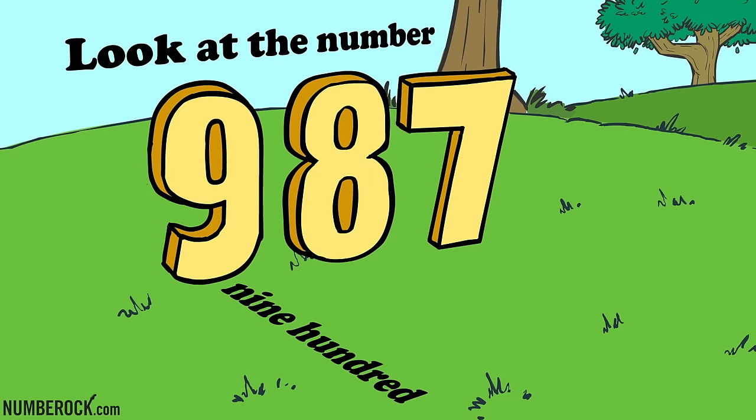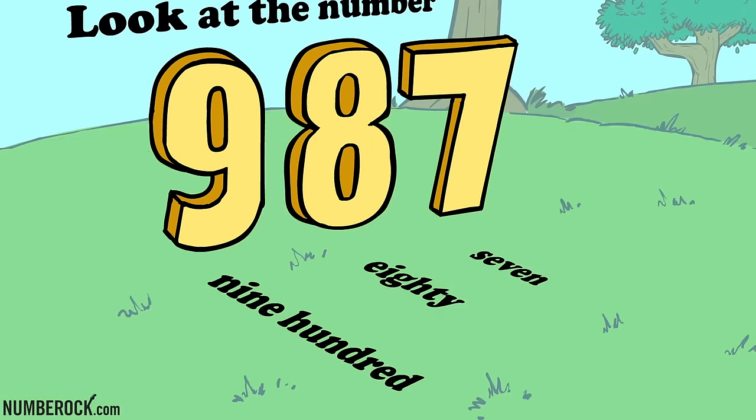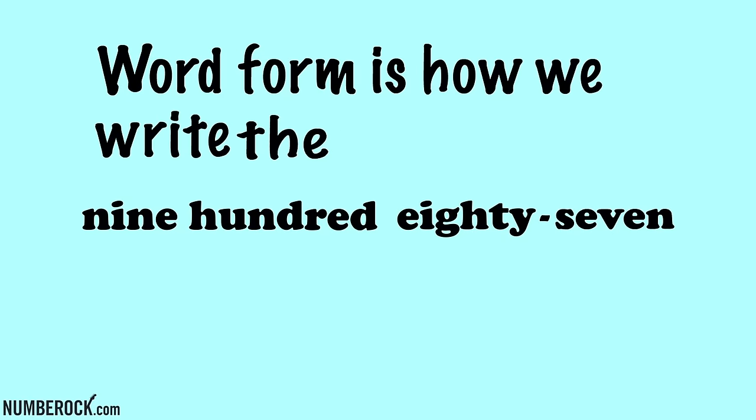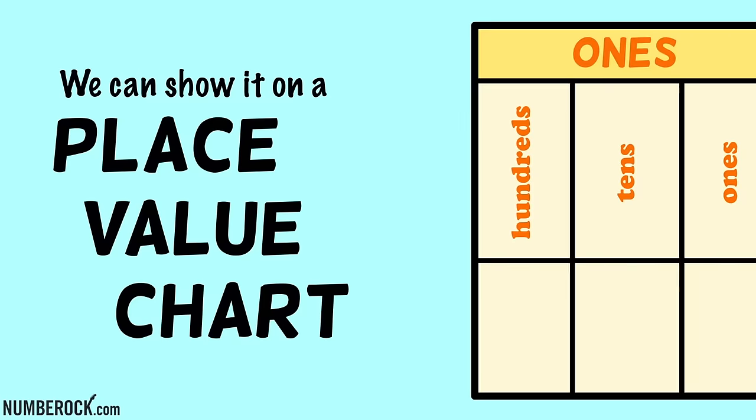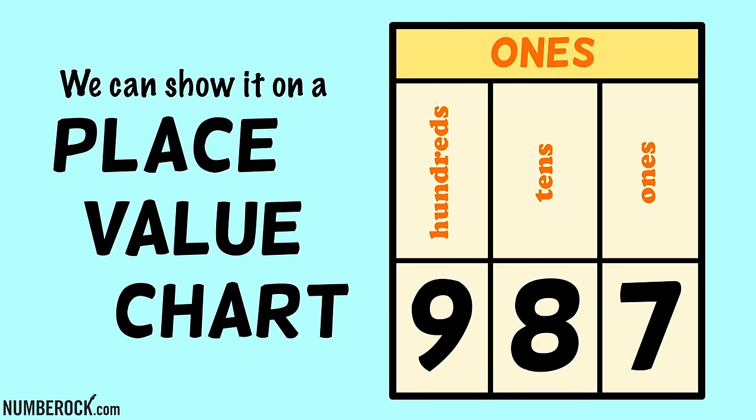Look at the number 987. Word form is how we write the words with a pencil or pen. We can show it on a place value chart.